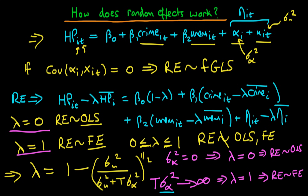In practice, as I've said, lambda typically lies between zero and one. So the random effects system is what we call a quasi-demeaned system — it's quasi-demeaned because we've taken off some fraction of the time-mean values from the original values. It's not fully demeaned unless lambda equals one.